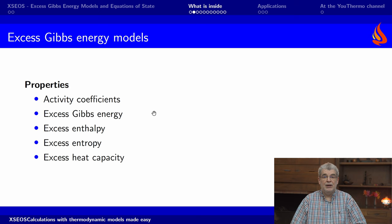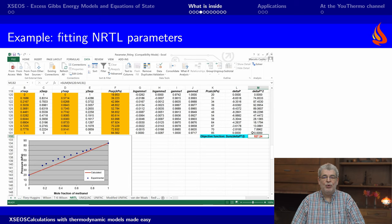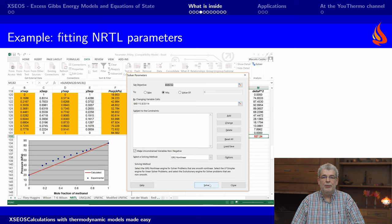Here is an example of XS-COS in action for the calculation of excess properties. Here is an example of parameter fitting, where the parameters of the NRTL model are fitted to binary vapor-liquid equilibrium data.